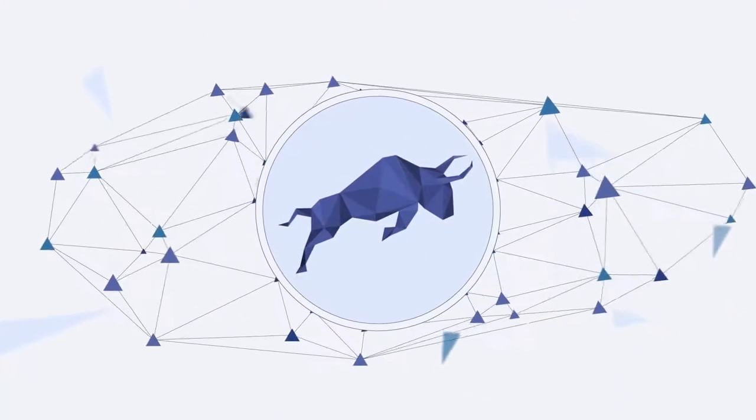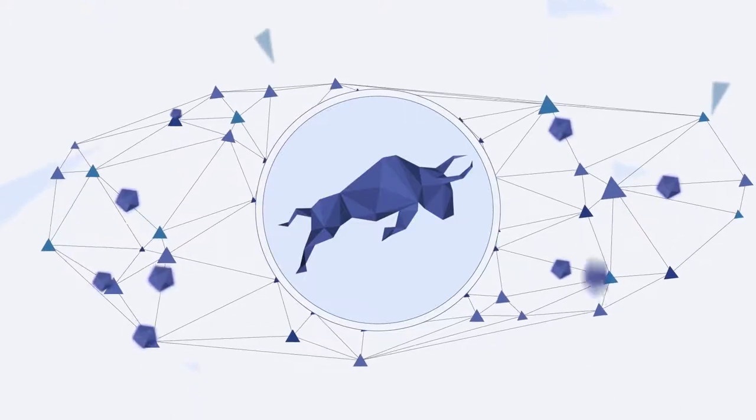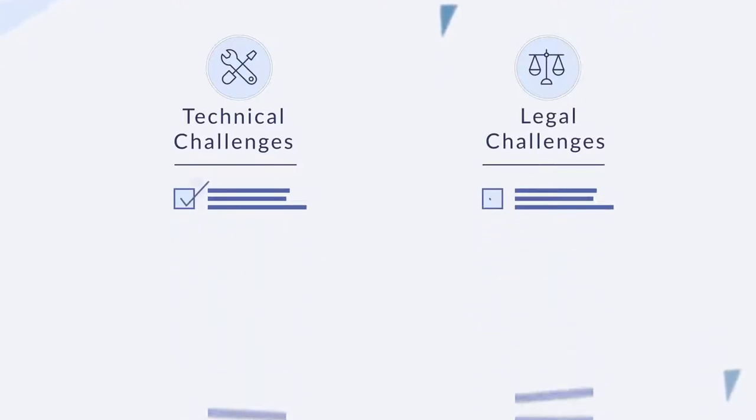To facilitate this mega-trend, Polymath is building the world's first decentralized protocol that empowers corporations to launch their own security token by simplifying the technical and legal challenges of a compliant token launch.